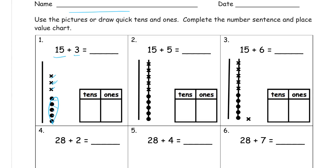So 15 plus 3 — you can see there's just one 10 because that 5 and these three only make 8. 5 plus 3 is 8. So we have to complete the number sentence to 18. For 15 plus 5, you can see here the two fives made a quick 10, so there are two tens here and 0 ones — 20.